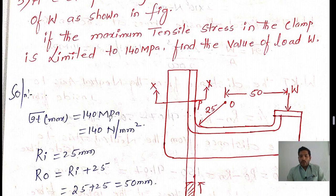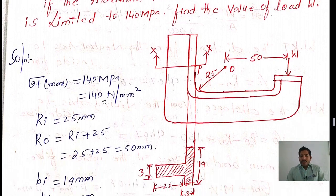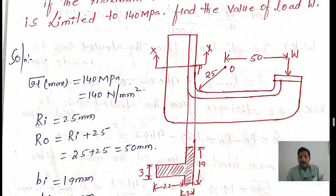1 Megapascal is equal to 1 N per mm square, so instead of Megapascal we can represent N per mm square. Here the inner radius of the C-clamp, measured from the origin point, is given as 25 mm, represented as RI.